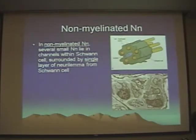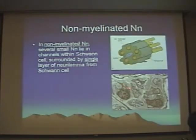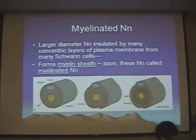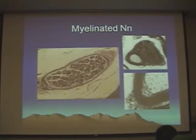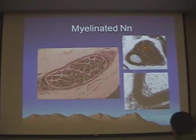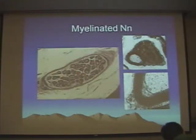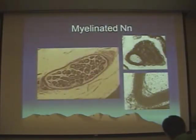In non-myelinated nerves, a single Schwann cell surrounds many small peripheral axons. You can see these Schwann cells with their distinctive nuclei, with several axons within each Schwann cell. In myelinated neurons, however, a single Schwann cell forms many layers of cell membrane around a single axon, and these Schwann cells line up like boxcars along the axon. In cross-section, you see these large Schwann cells, with many layers of cell membrane surrounding the individual axon. Endoneurium in this case would surround the Schwann cell and the axon itself.